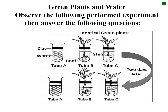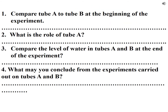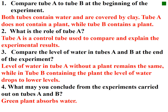An experiment on green plants and water: tube A is the control, containing clay and water — the water level remains the same. Tube B contains a plant — the water level decreases after two days. Tube C has a plant without root hairs — the water level decreases only a little. Tube A is the control tube, used to compare and explain the experimental results. Tube A has no plant while tube B contains a plant.